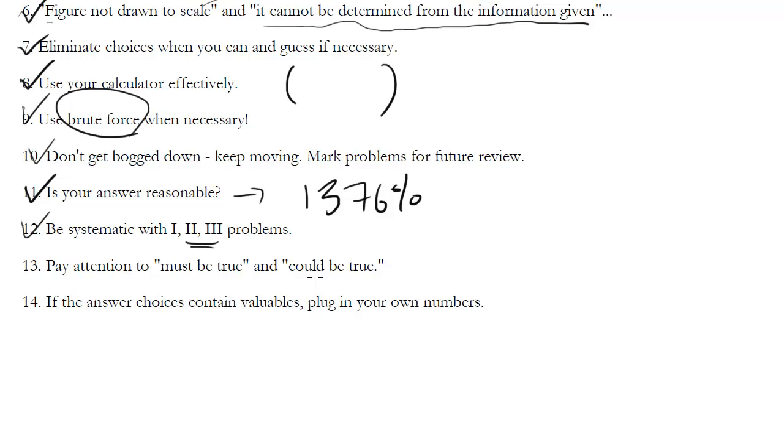Pay attention to must be true and could be true. So must be true questions, you must pick the choice that always 100% of the time has to be true given the conditions. If you can find at least one scenario where that choice isn't true, you can't pick it. For could be true, the opposite is the case. You want to find the one that at least once works. If it doesn't work a million, trillion times but has one case where it could work, then it's an answer that could be true. If there's never a case that that would be true, then you wouldn't pick it. So just be careful. We'll see a lot of examples of those.